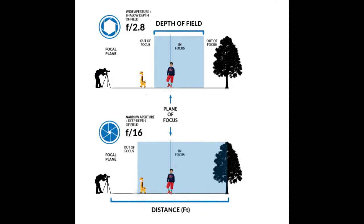To get the blurry effect in your image, you need to restrict your focus to a particular object within your image and the rest can be kept out of focus. This is achieved with a low f-stop number and the effect is called shallow depth of field.